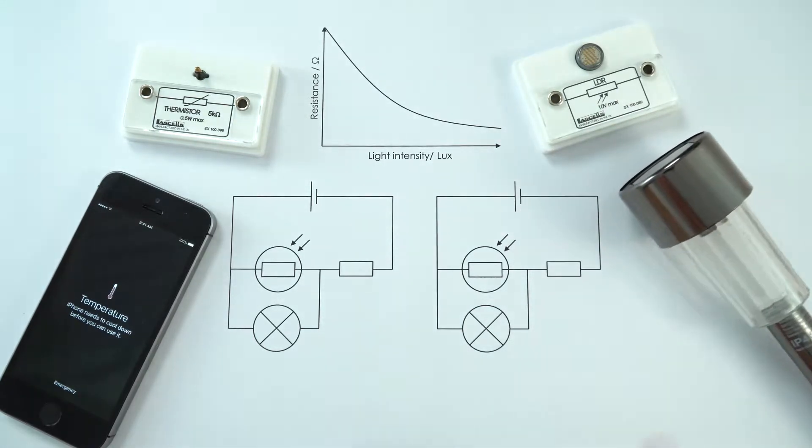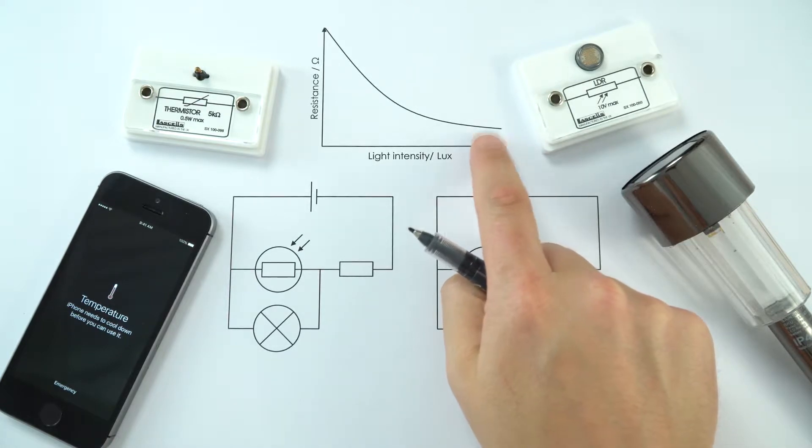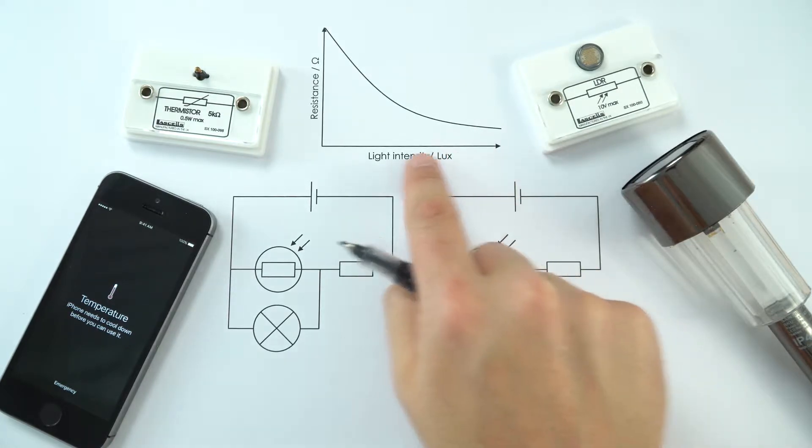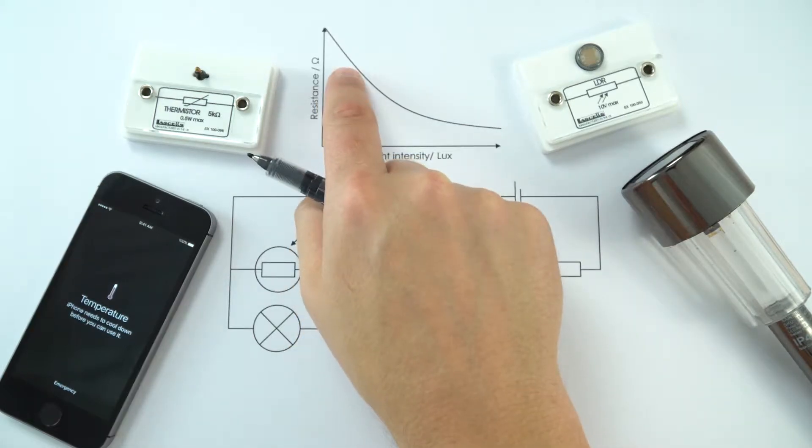So what we have is an LDR inside this somewhere, and with an LDR when you've got a high light intensity and it's bright, it means it's got a low resistance. But when it gets darker and the light intensity decreases, we get an increase in its resistance.